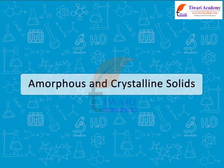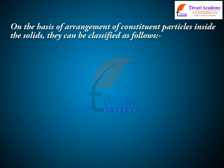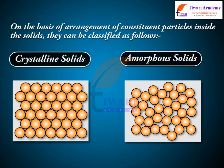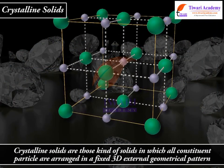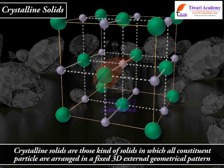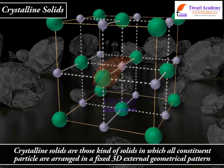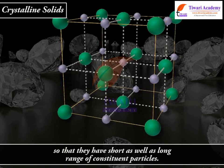Amorphous and crystalline solids. On the basis of arrangement of constituent particles inside the solids, they can be classified as follows: 1. Crystalline solids, 2. Amorphous solids. Crystalline solids are those kind of solids in which all constituent particles are arranged in a fixed 3D external geometrical pattern, so that they have short as well as long range order of constituent particles.